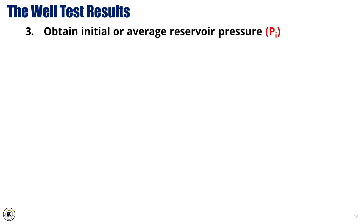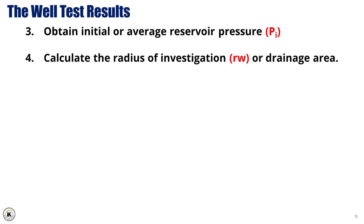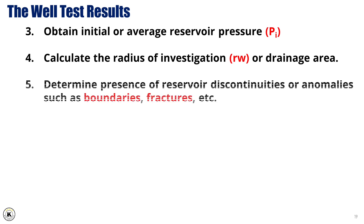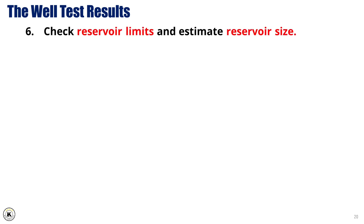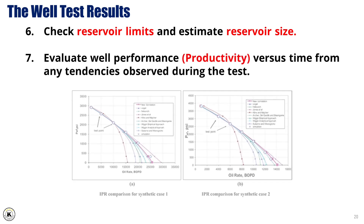3. Obtain the initial or average reservoir pressure to establish a baseline for reservoir performance. 4. Calculate the radius of investigation (Rw) or drainage area to determine the extent of the area being drained by the well. 5. Determine the presence of reservoir discontinuities or anomalies — such as boundaries, fractures, or other heterogeneities — using pressure transient analysis. 6. Check reservoir limits and estimate reservoir size. 7. Evaluate well performance or productivity versus time from any tendencies observed during the test.